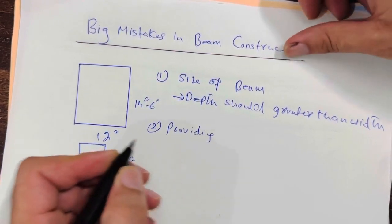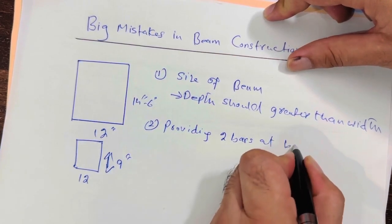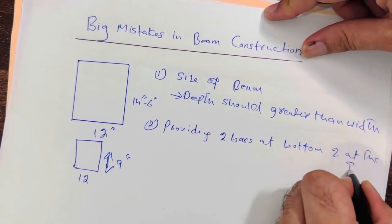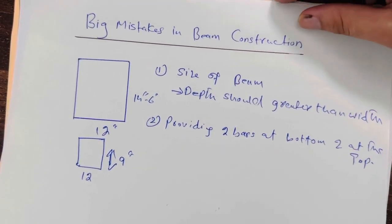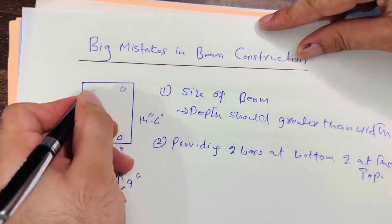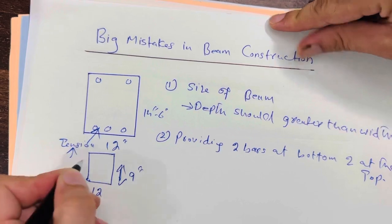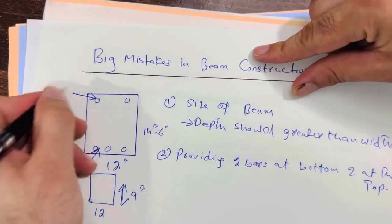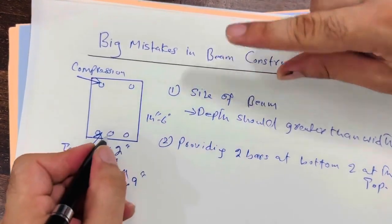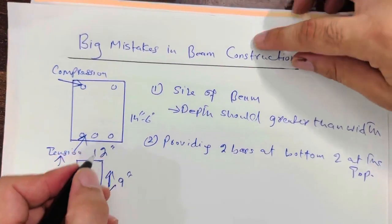Another big mistake is providing two bars at the bottom and two bars at the top. At the bottom you should use three or more bars, and at the top two bars. This is because the bottom is the tension zone and concrete is weak in tension, while concrete is strong in compression. So at the bottom provide more bars compared to the top.